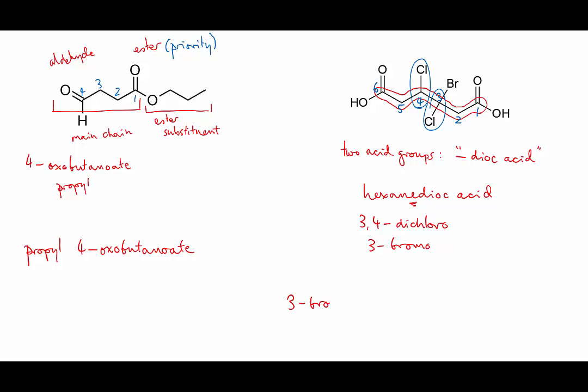Putting this all together with the bromo and chloro in alphabetical order gives us 3-bromo-3,4-dichloro-hexanedioic acid.